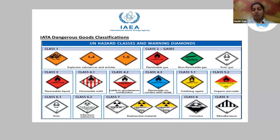Class 5.1 is an oxidizing agent, and class 5.2 is organic peroxide. Class 6.1 is toxic and class 6.2 is infectious substance. Class seven is radioactive material, class eight is corrosive, and class nine is miscellaneous. These classifications are safety precautions to ensure that different goods are transported safely.